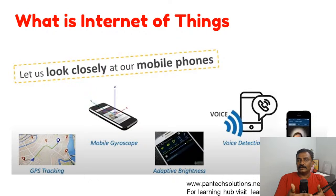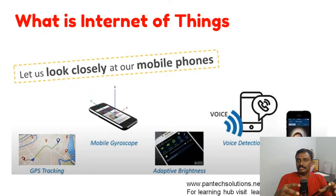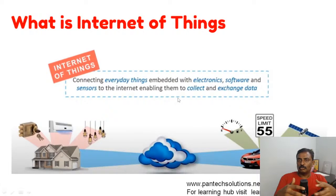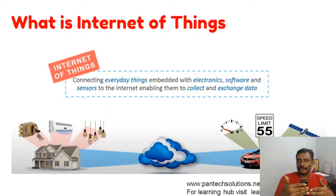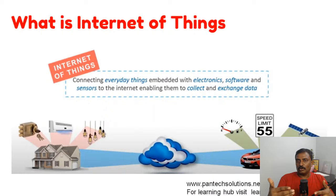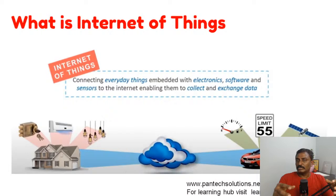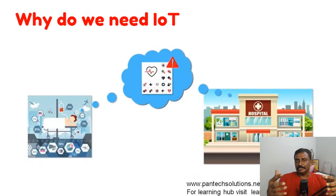Anything connected to the internet where you process data and take decisions is called Internet of Things. You'll have a combination of hardware, software, and sometimes mechanical parts and sensors. One more example is smart home automation — based on your GPS location, when you reach home the AC and lights turn on automatically. Anything that sends data to the cloud, analyzes it, takes decisions, and performs some activity is IoT.